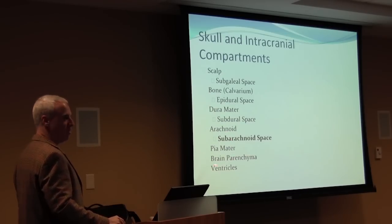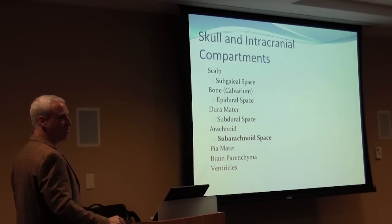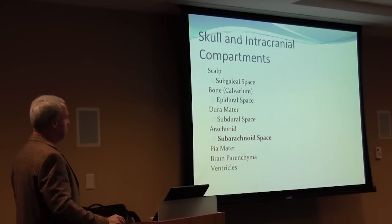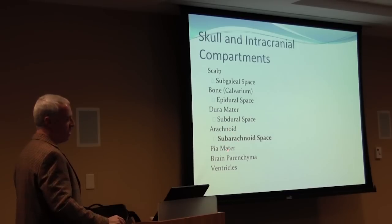Then there's the brain parenchyma — the brain tissue — then there are the ventricles. So what we're going to talk about are lesions and aneurysms that are located in the subarachnoid space, below the arachnoid and above the pia mater.